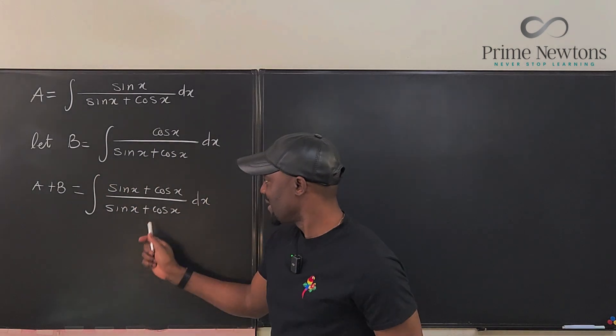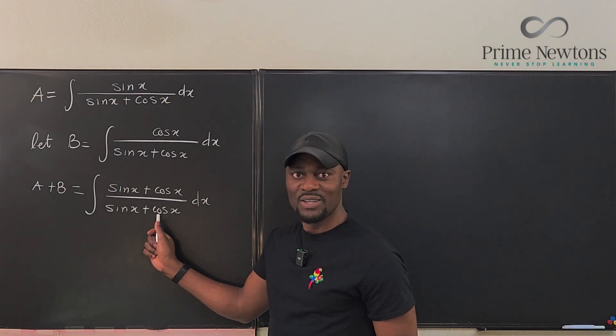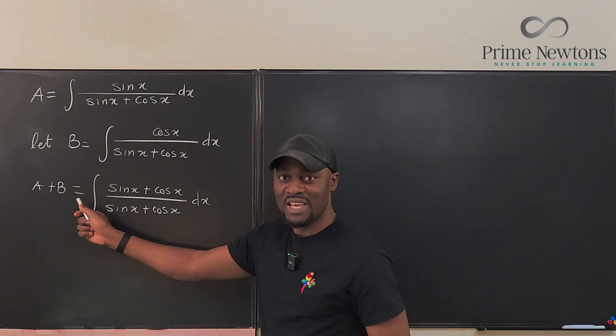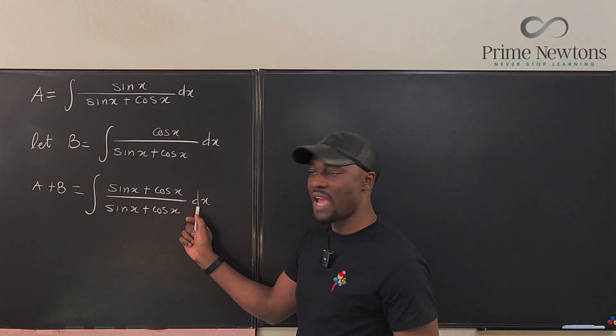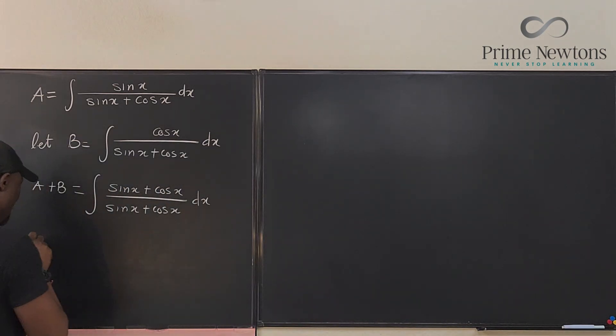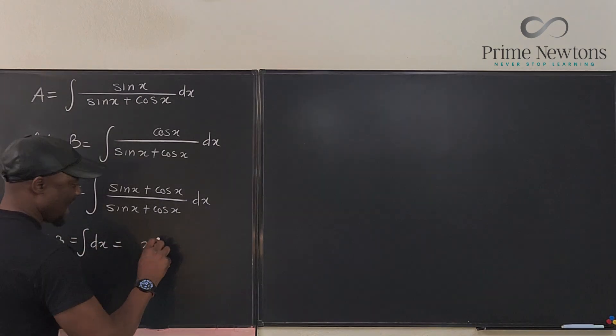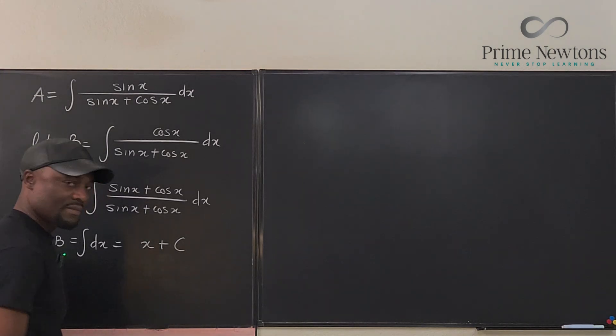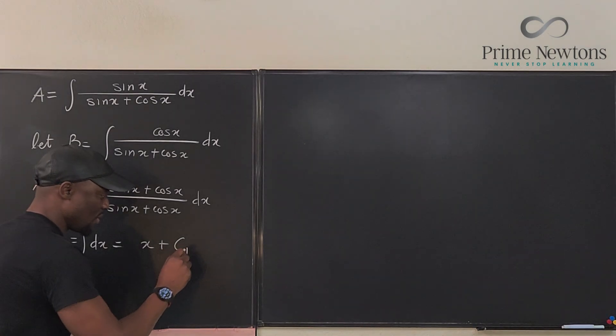Guess what? The integrand becomes one. So ultimately A plus B is just the integral of dx because this cancels out. So you got A plus B equals the integral of dx, and that's going to be x plus C. I'm going to call this C₁.